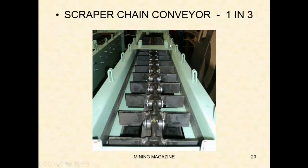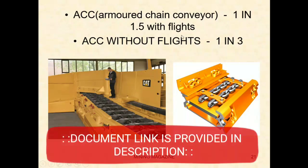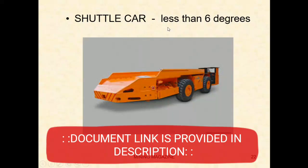Next is the scraper chain conveyor. The armored chain conveyor runs at a 1 in 3 gradient. With flights, it can run at 1 in 1.5 gradient. Without flights, it is 1 in 3. For a continuous miner with attachment, the gradient should be less than 6 degrees.